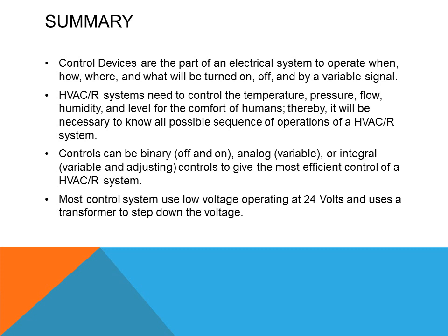Controls give the most efficient operation to an HVAC system. Most control systems use low voltage operating at 24 volts and use a transformer to step down the voltage to the different types of controls.